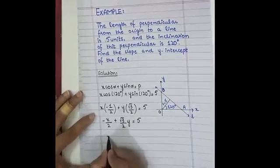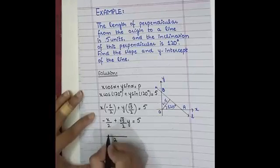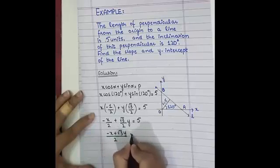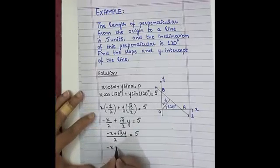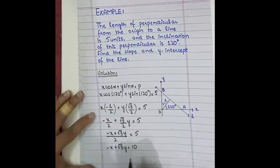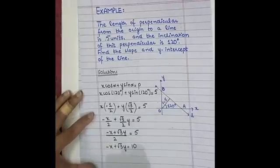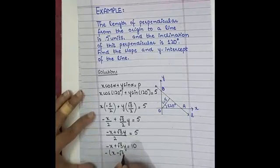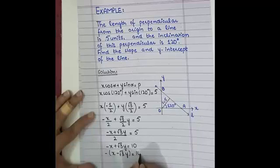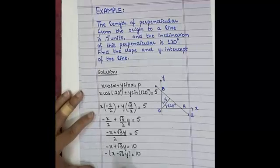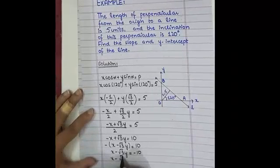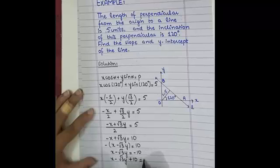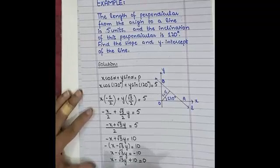Taking LCM of 2 on the left side: minus x plus root 3 y equals 10. This 2 migrates to the other side giving minus x plus root 3 y equals 10. Taking minus common: x minus root 3 y equals minus 10, so x minus root 3 y plus 10 equals 0. This is the equation of the line.